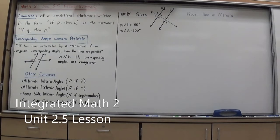It's a complete reverse of the corresponding angles postulate. It states if two lines intersected by a transversal form congruent corresponding angles, then the lines are parallel. So if in this diagram I can see that these two corresponding angles are the same, I know that lines A and B must be parallel.